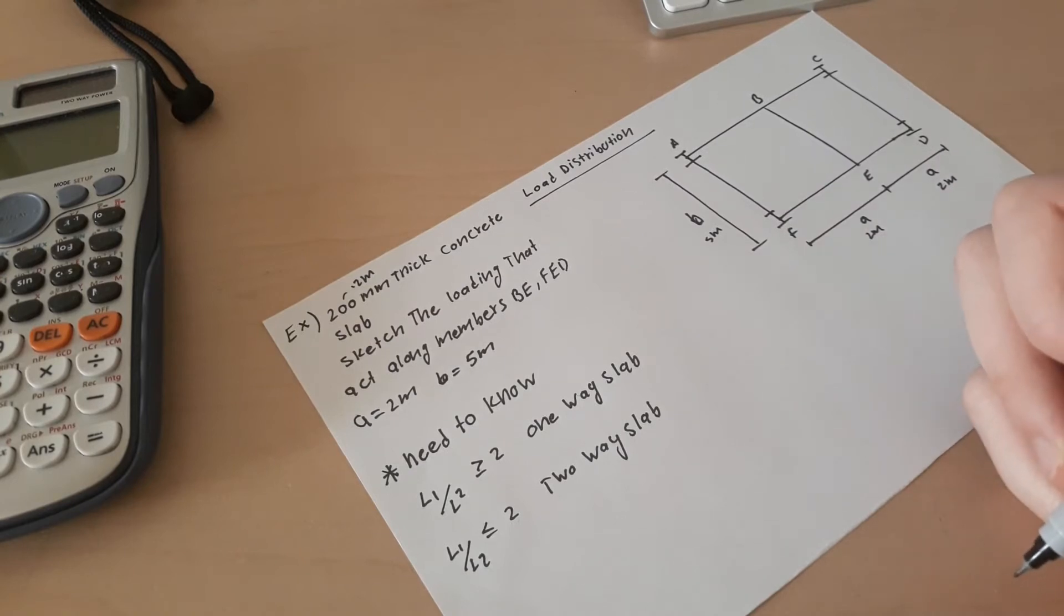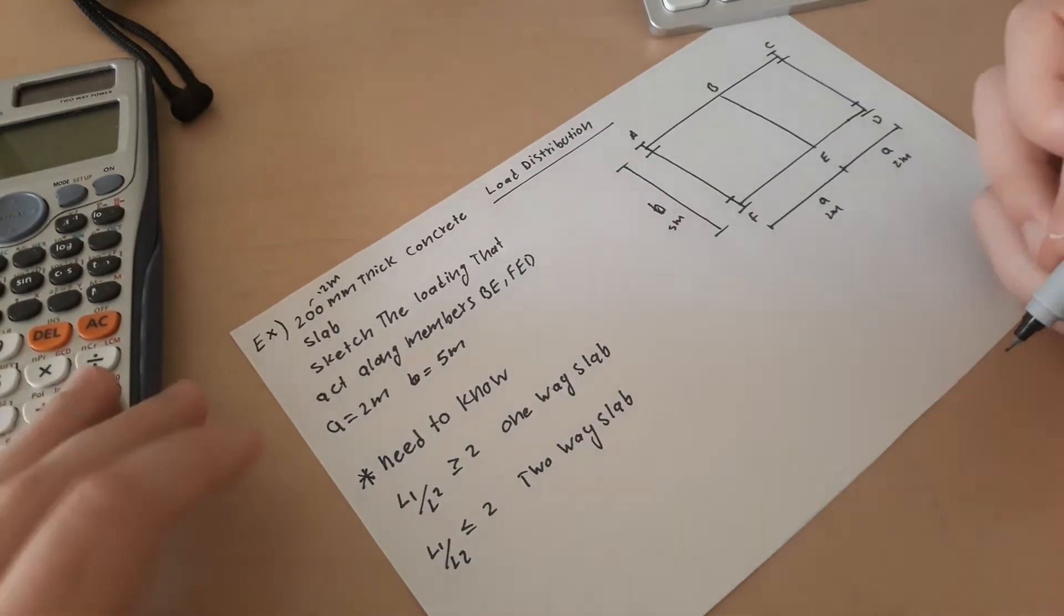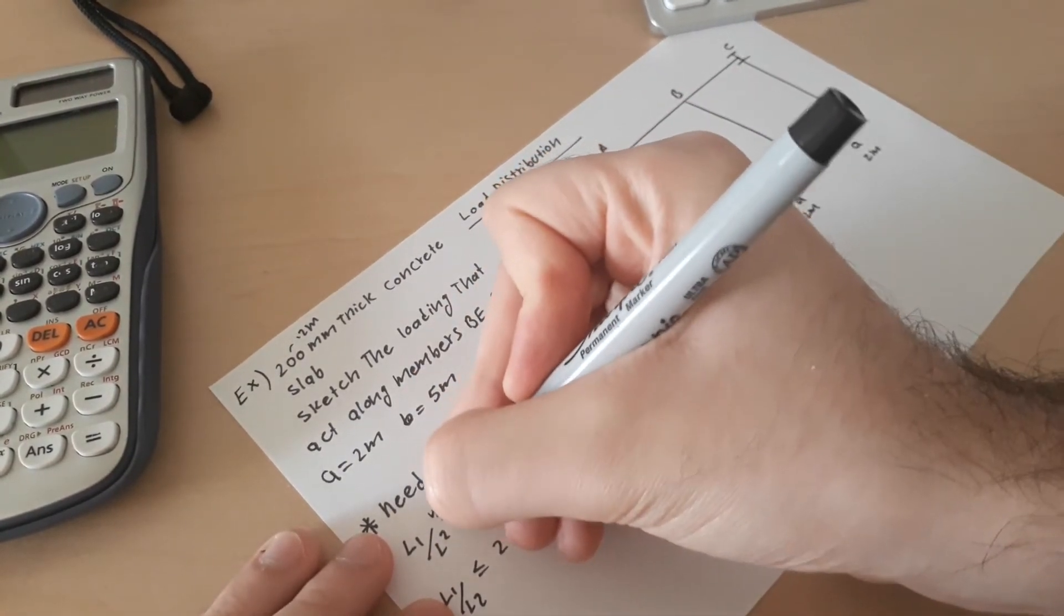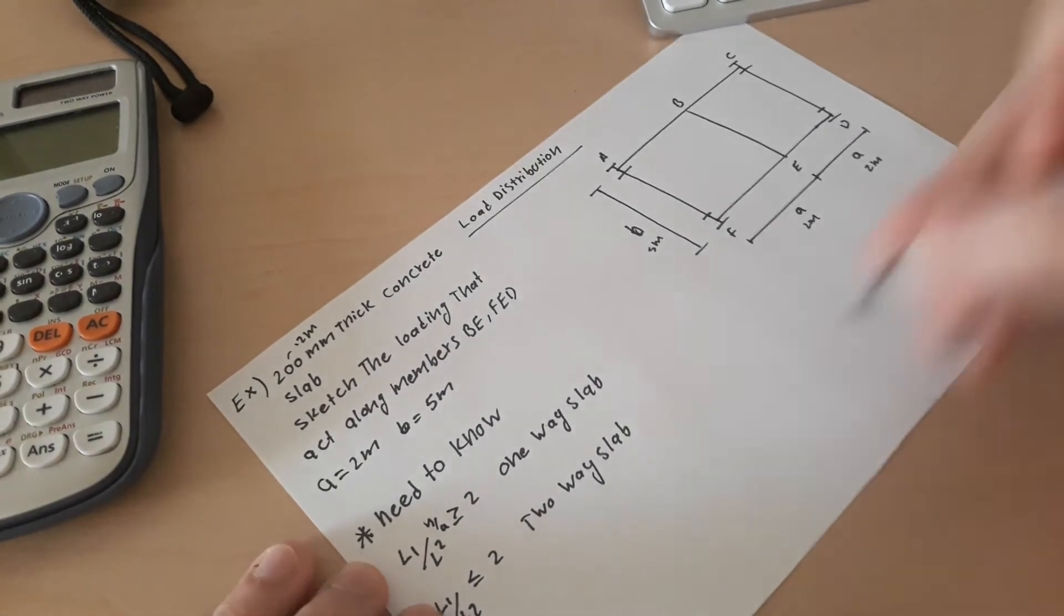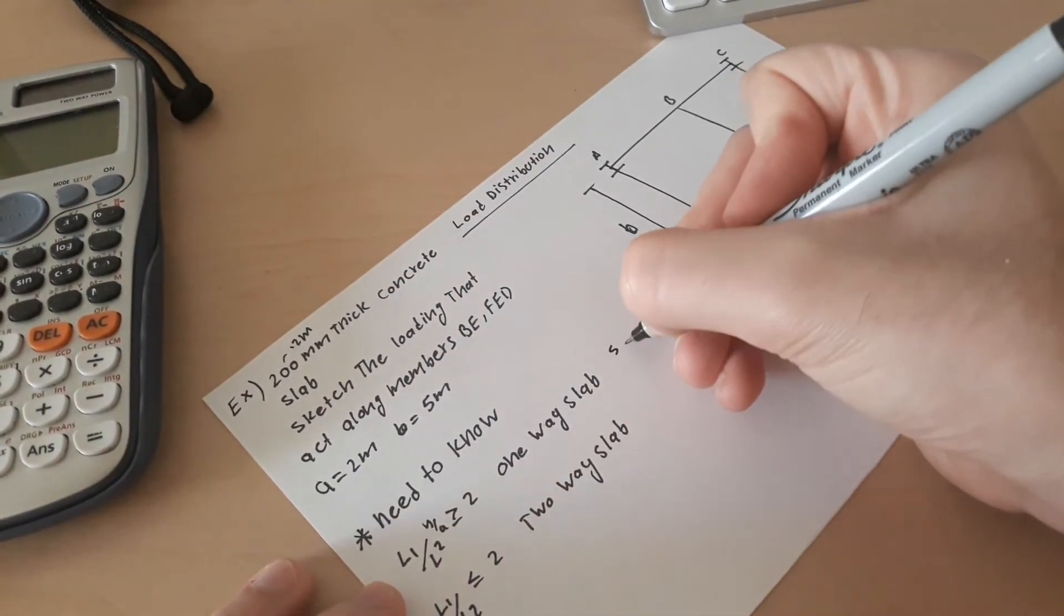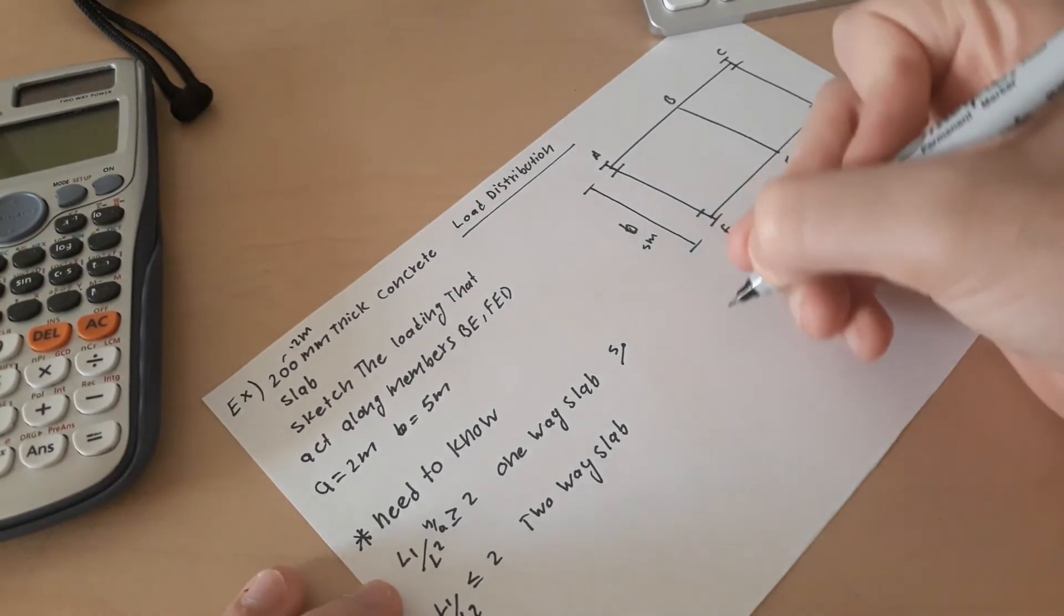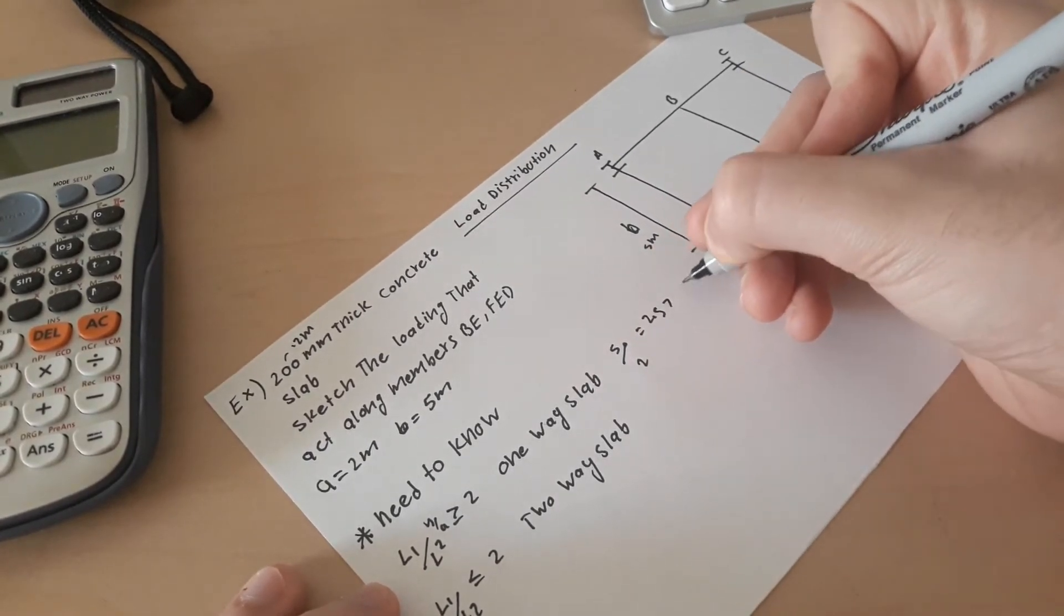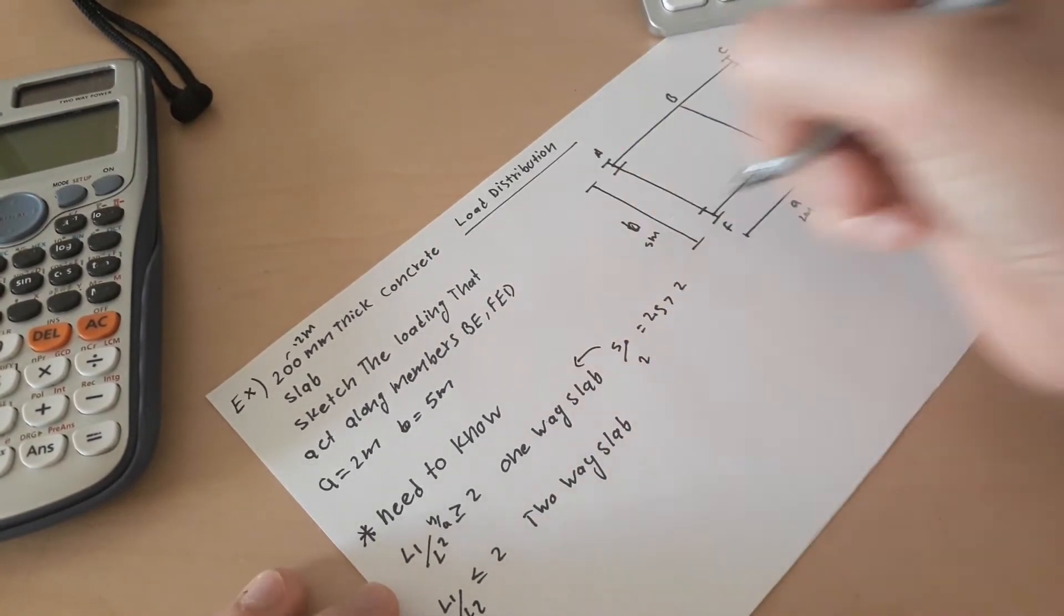Something we need to know is: is L1 over L2 greater than or equal to 2 which is one-way slab, and L1 over L2 less than 2 is two-way slab. So we know that b over a, right here b is 5 meter over 2 meter equals to 2.5. So it's greater than 2, meaning that is one-way slab.